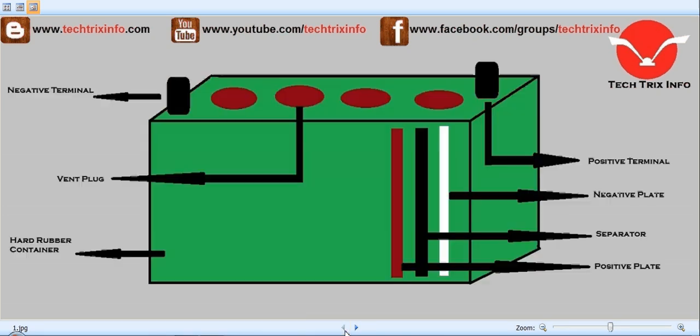Each component of a lead-acid battery is shown here and will be defined in this topic. As you can see, this is what a lead-acid battery looks like. We can see the negative terminal here and the positive terminal. On the top, the red marked areas are the vent plugs.